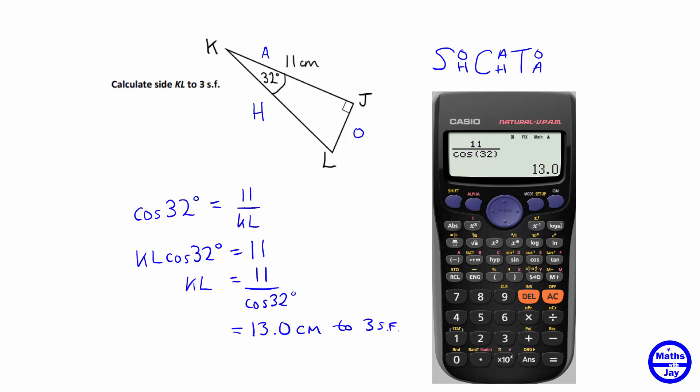If you had made a mistake while doing the calculation, so maybe you might have keyed in eleven multiplied by cos thirty-two on your calculator, that would have given you an answer less than eleven, so you would have realized that there was something wrong with that.